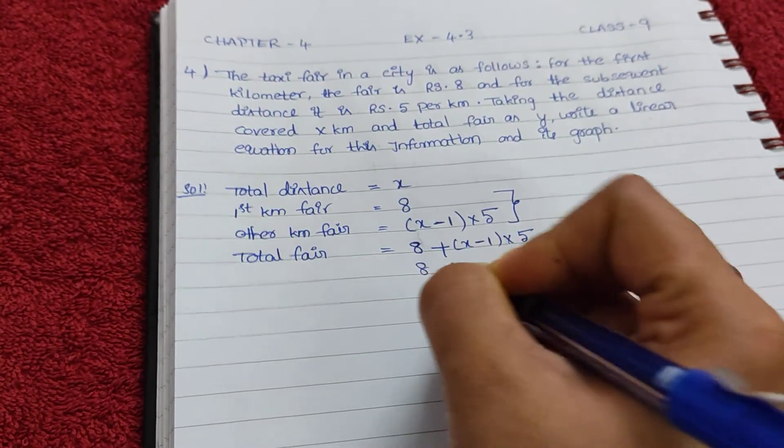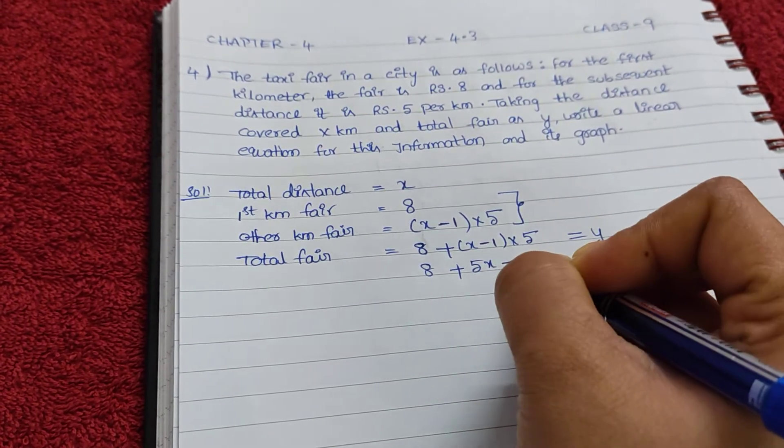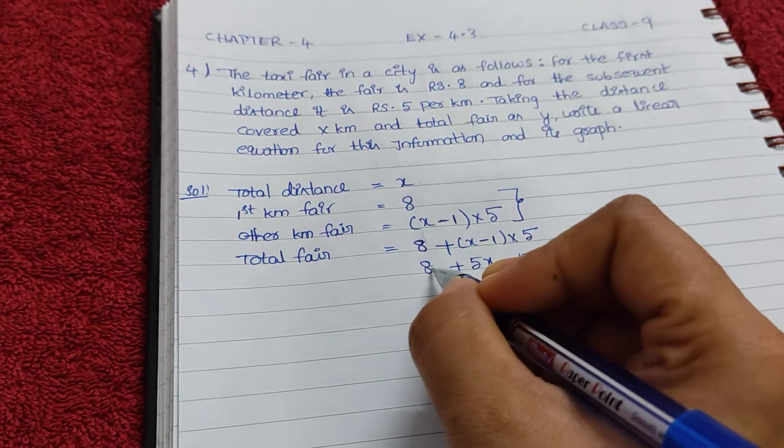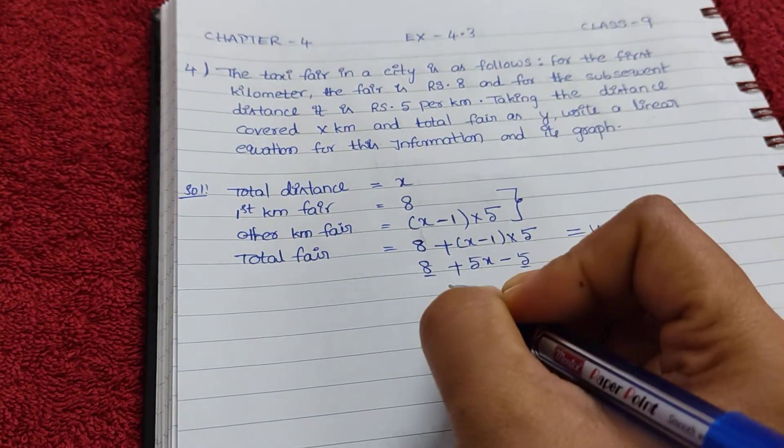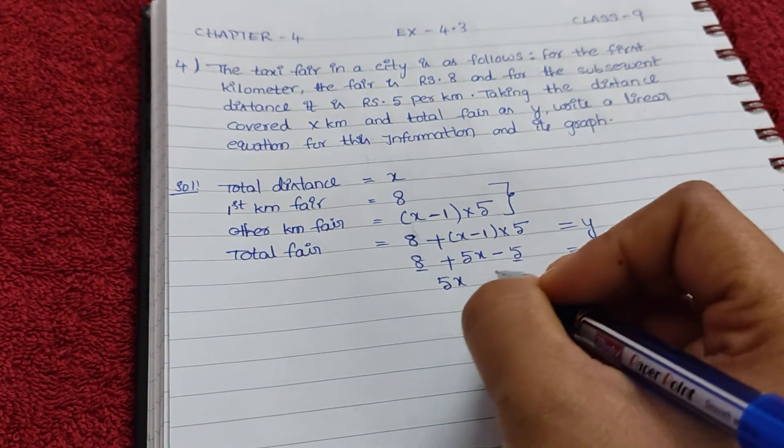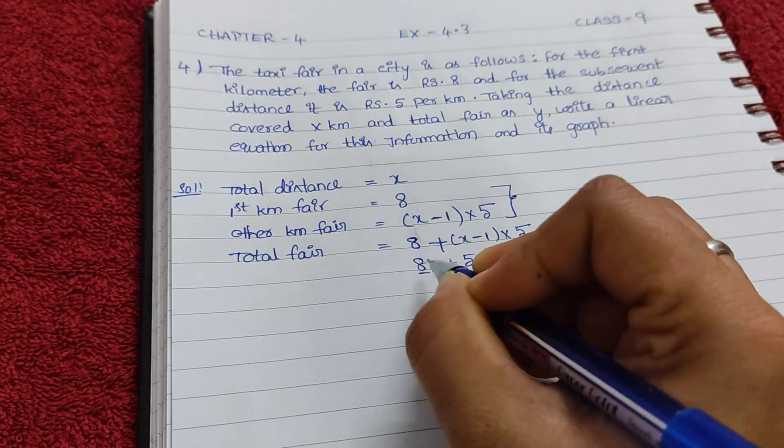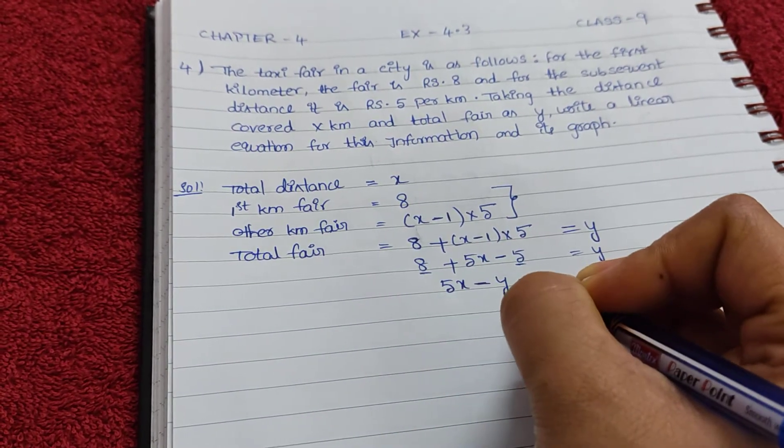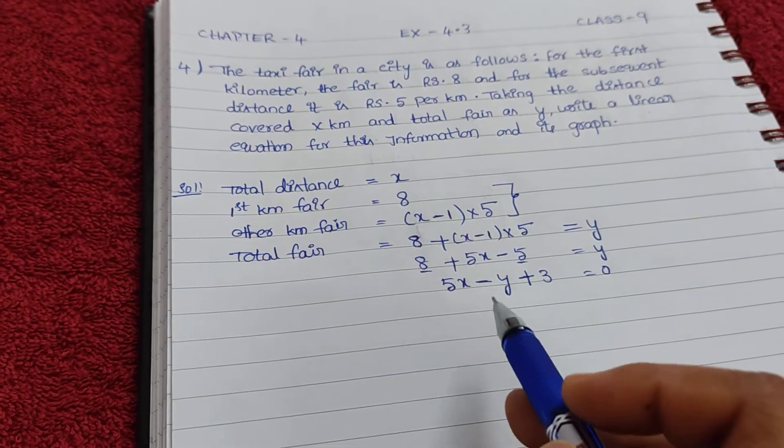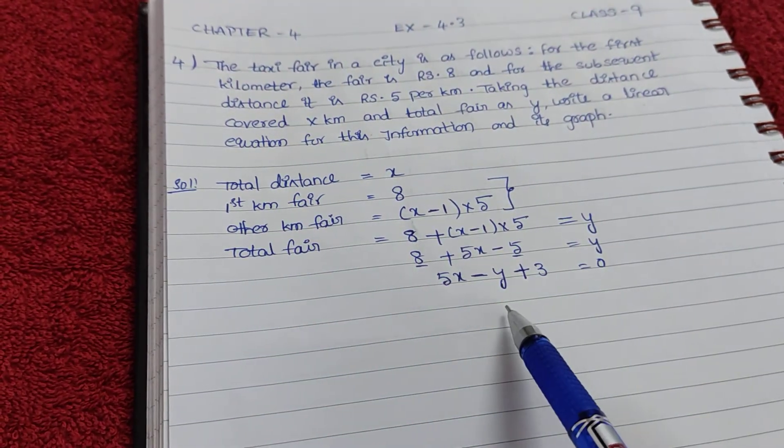Now we have to solve. 8 plus 5x minus 5 equals to y. 8 minus 5 is 3, so 5x plus 3 equals y. Taking minus y to the left side: 5x minus y plus 3 equals to 0. Here we got one equation. We found the linear equation.